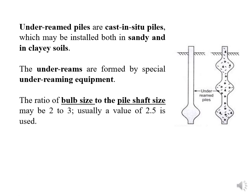The ratio of the bulb size to the pile shaft size varies from 2 to 3, but usually we take 2.5. What does this mean? The diameter of the bulb divided by the diameter of the pile shaft equals either 2, 3, or 2.5. We have to maintain this ratio of bulb size to pile shaft size at 2.5.